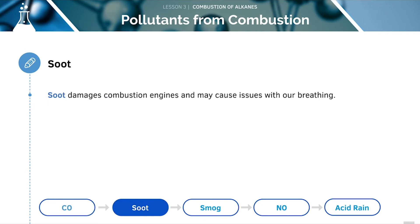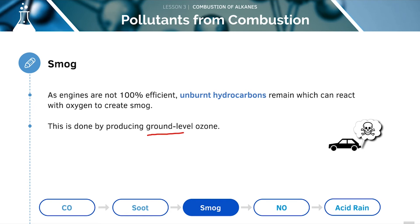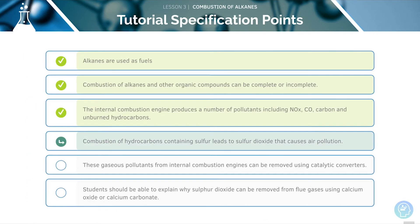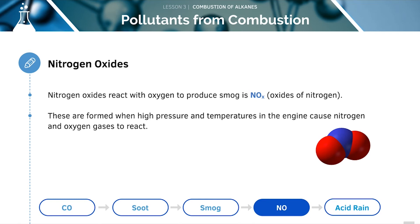Soot can damage combustion engines and may cause issues with our breathing. Unburnt hydrocarbons can remain in the engines, which can react with oxygen, creating smog — this occurs because engines are not always 100% efficient, and they produce ground-level ozone. Sulfur dioxide is also produced, and nitrogen oxides react with oxygen to produce smog. These are formed when high pressure and high temperatures in the engine cause nitrogen and oxygen to react.